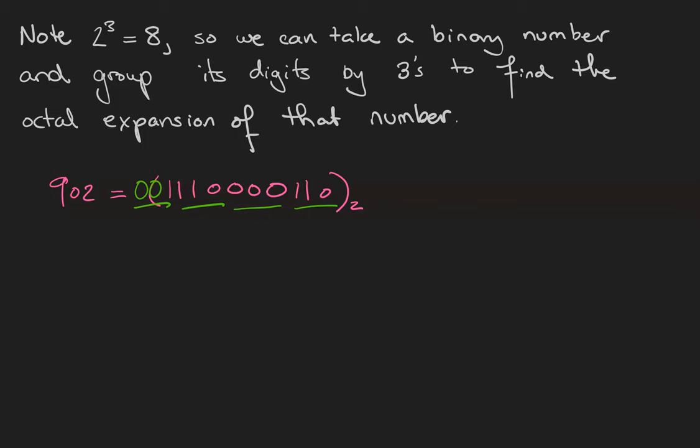So our four groups are 1 1 0, 0 0 0, 1 1 0, and 0 0 1. Now simply read off what each one of those numbers is in base 10. 1 1 0 - remember that when we have three binary digits, that's a 4 and a 2 and a 1.